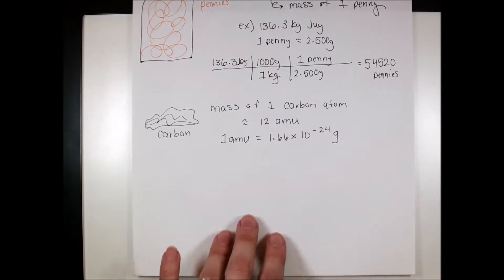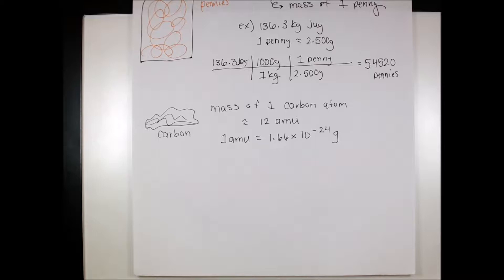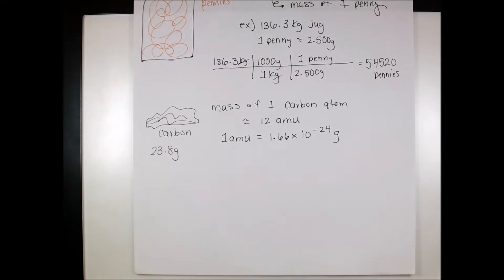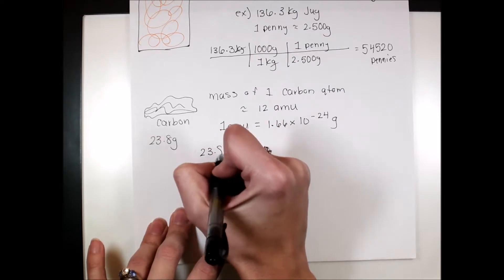We have our two conversion factors, and now let's work with a sample. Let's say we have 23.8 grams of carbon. How many carbon atoms do we have in our pile? We can use the same approach as before — it's with carbon now, so the numbers won't be as clean. We're dealing with factors of 10 to the negative 24, but we'll set it up the same way: start with 23.8 grams of carbon.